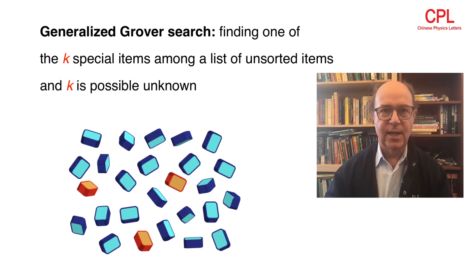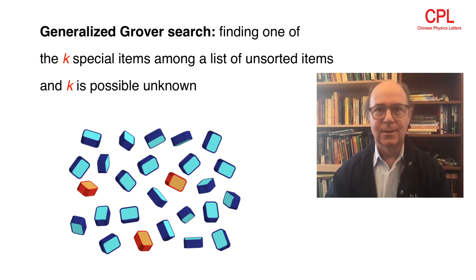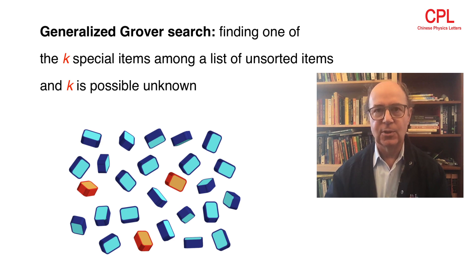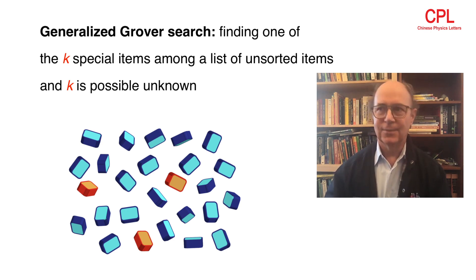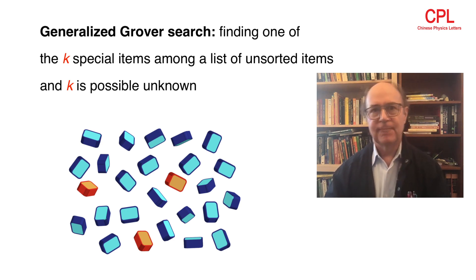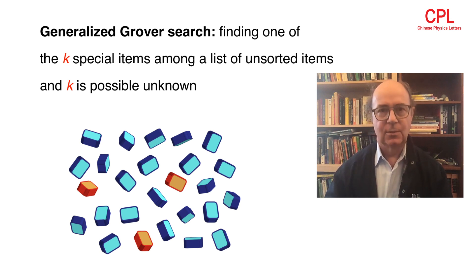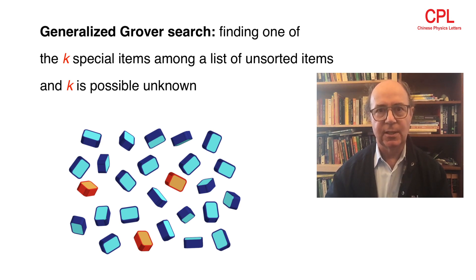you have k states, you don't know what they are, but you know that they have an energy which is lower than the other states. And the problem is now to find one of those states and also to determine what k is.